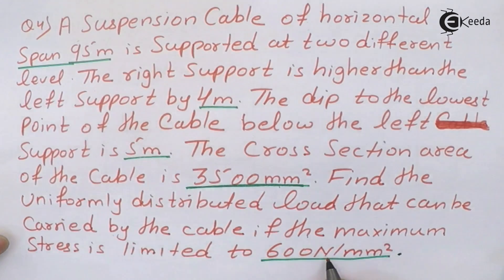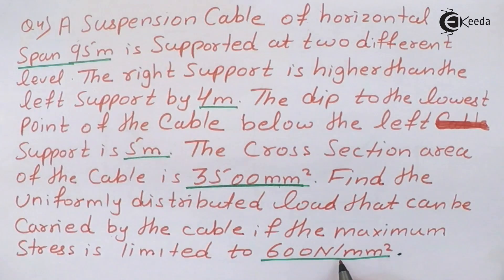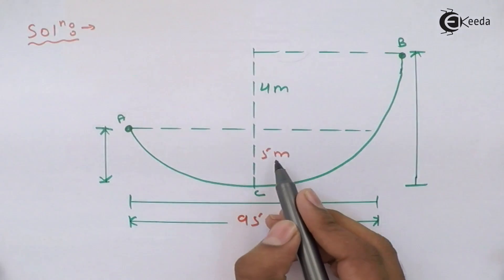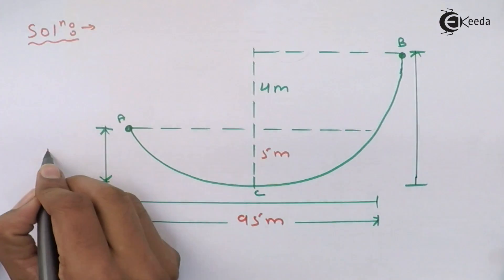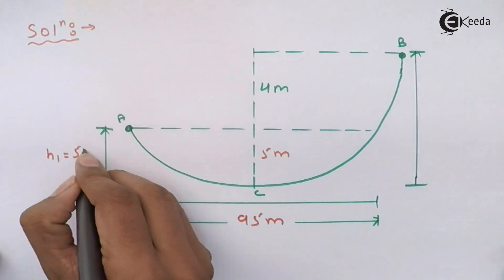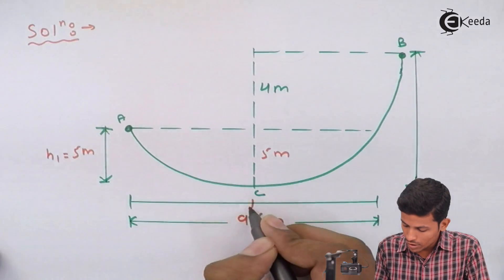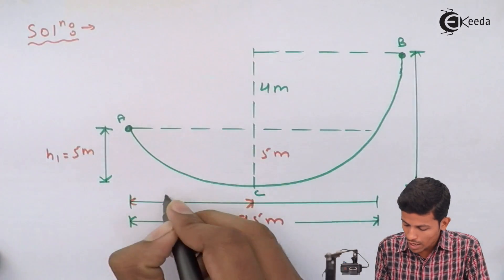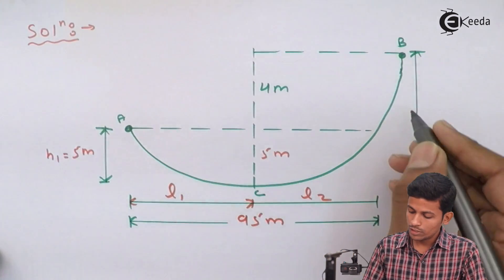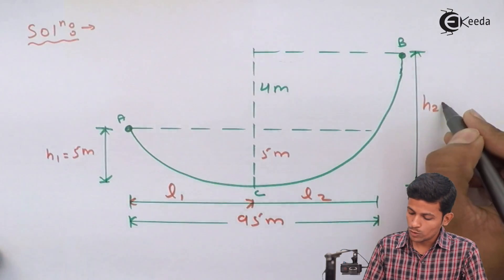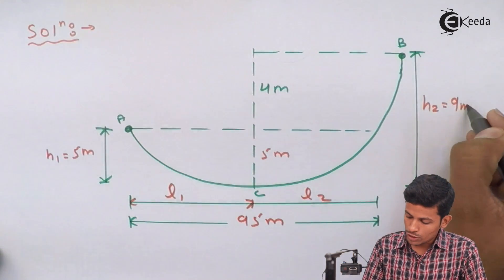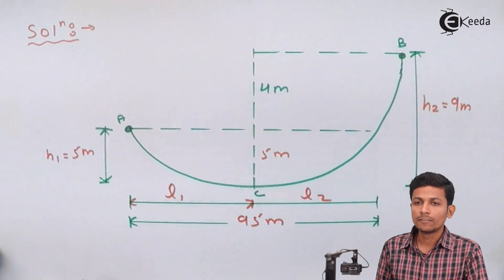If the maximum stress is limited to 600 N/mm², then T_max will be 600 N/mm². Now, since the depth below the left support is 5 meters, H1 = 5 meters. Therefore H2 = 5 + 4 = 9 meters.